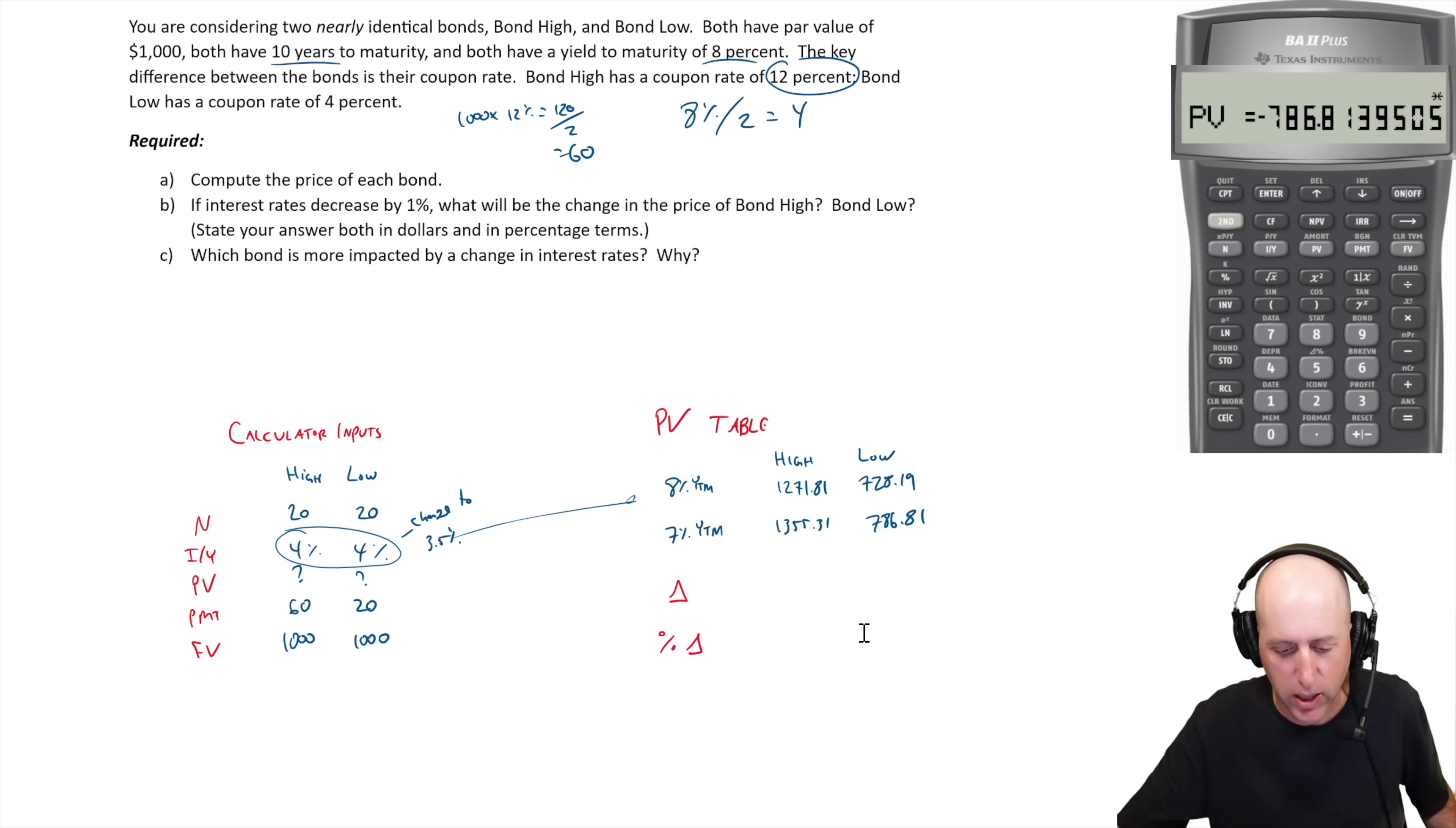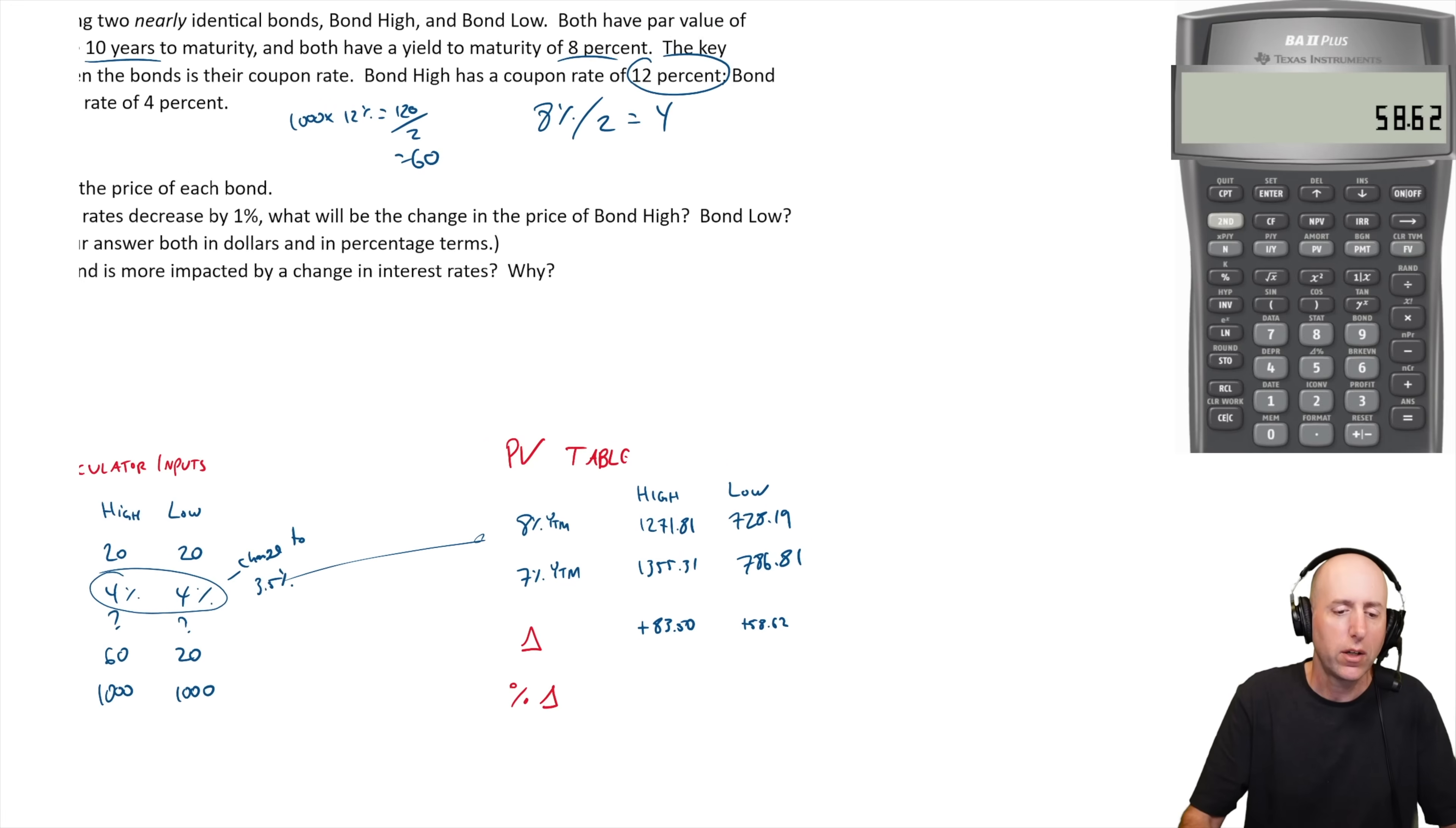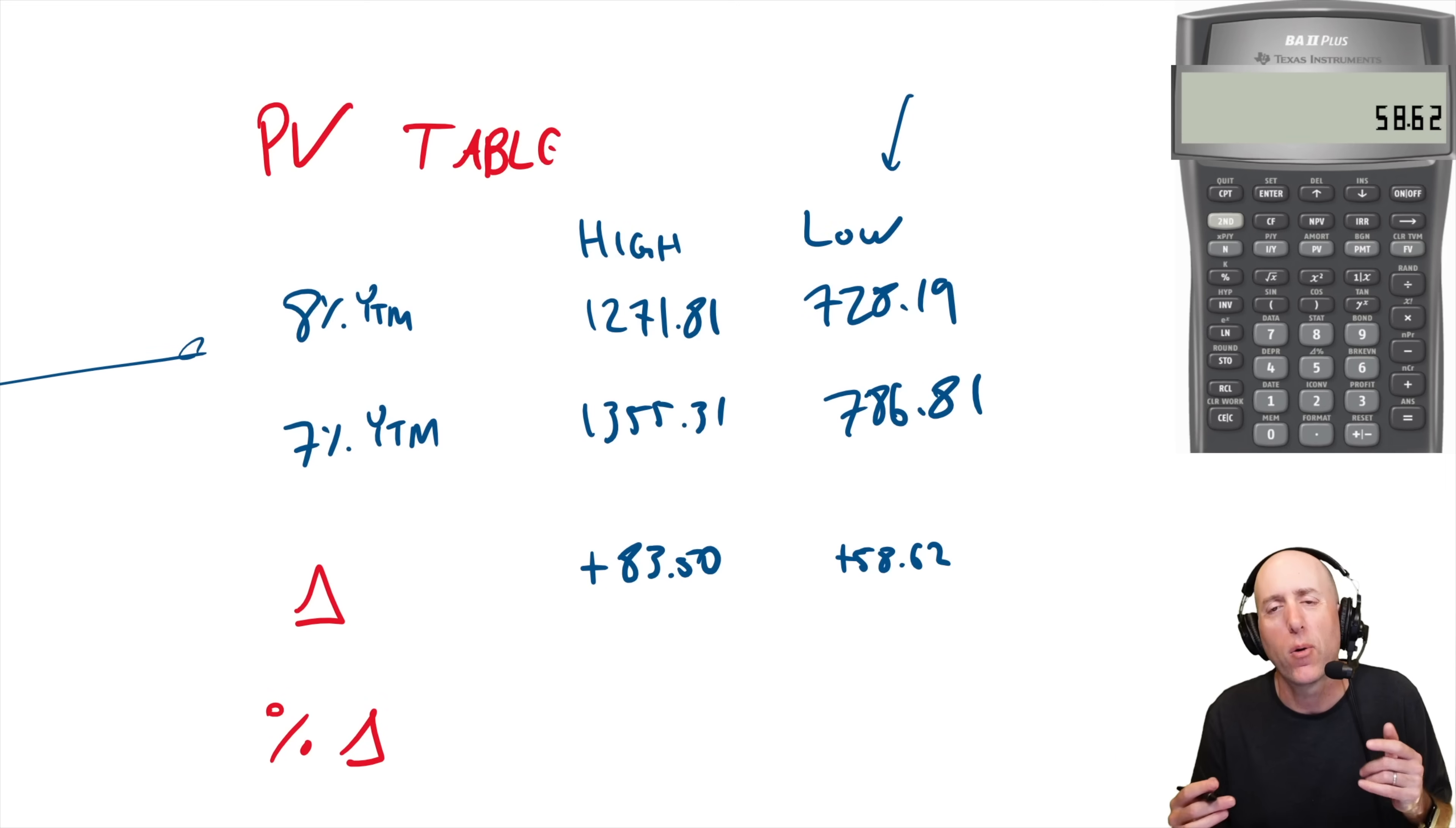Let's check the swings here, the changes. There's been an increase in the price of both bonds. $1,355.31 minus $1,271.81 means there's a change, an increase of $83.50 for our high bond. For our low bond, $786.81 minus $728.19, an increase of $58.62. Before I started, I said I hypothesized that the low bond is going to swing more than the high bond, but the change is actually lower.